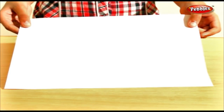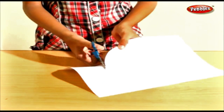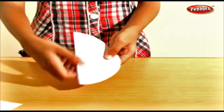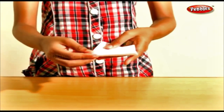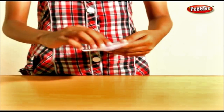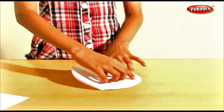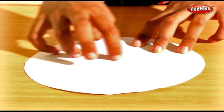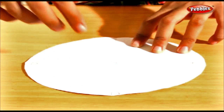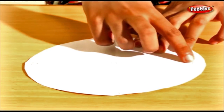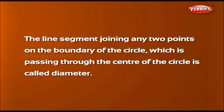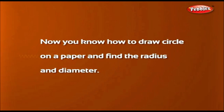Draw a circle in a paper. Cut the circle. Fold the circle into half, then fold it again. Now open the foldings. The two creased lines crossed each other — the two creased lines meet at a point. O is the center of the circle. OA is equal to the radius of the circle. BC is equal to the diameter of the circle. The line segment joining any two points on the boundary of the circle passing through the center is called diameter.